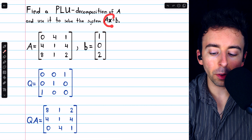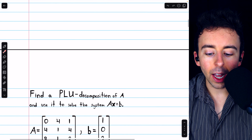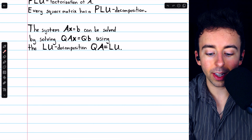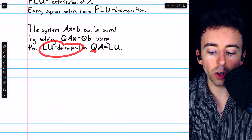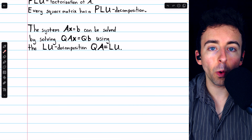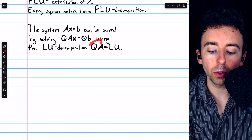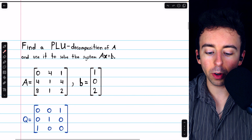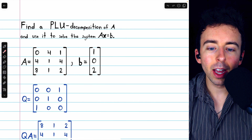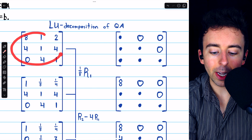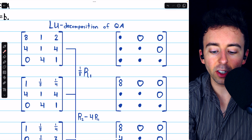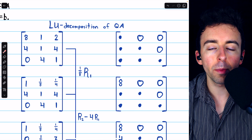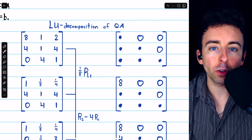Understanding we've multiplied this equation on both sides by Q, and thus we're in this situation QAX equals QB, we're going to use an LU decomposition of QA in order to solve this system. So of course we now need to find an LU decomposition of QA. This is our matrix QA. What we're going to do on the left column is perform row operations to get it into row echelon form. At the end, we end up with the upper triangular matrix U.